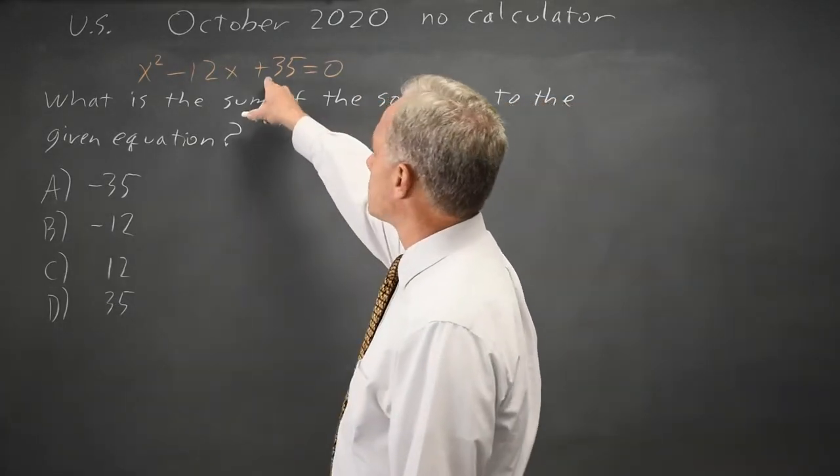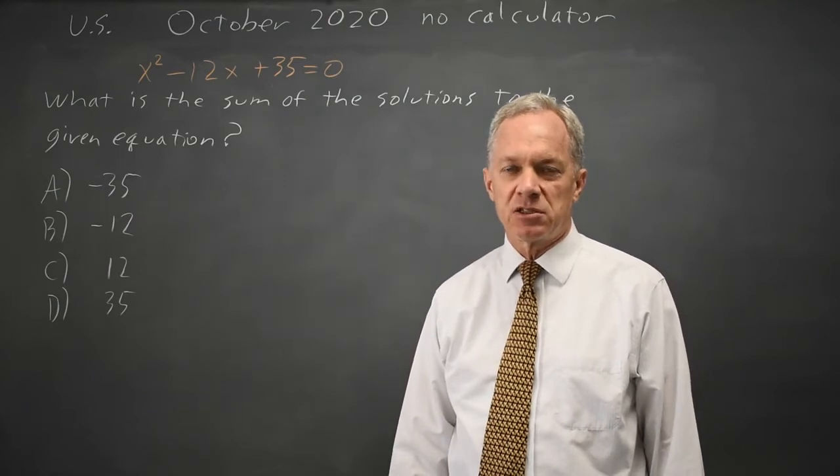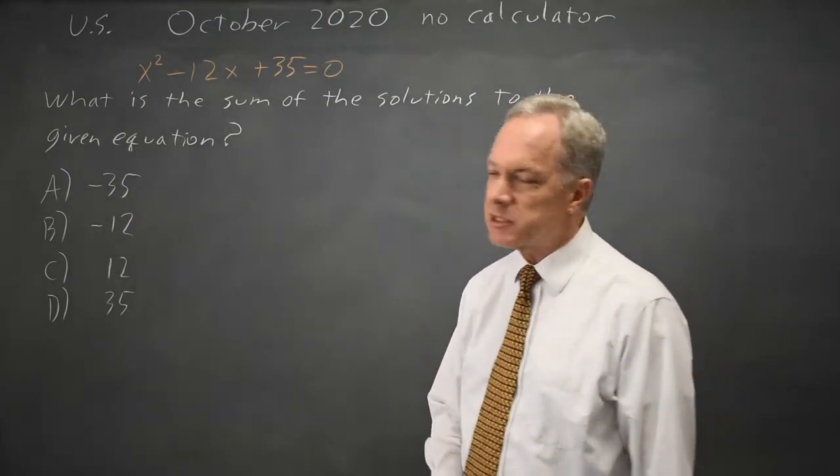They're asking us for the sum of the two solutions to this equation. One option is to solve the equation and add the two solutions. There's another option that we'll see once we've solved it.